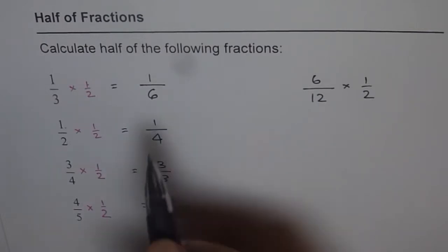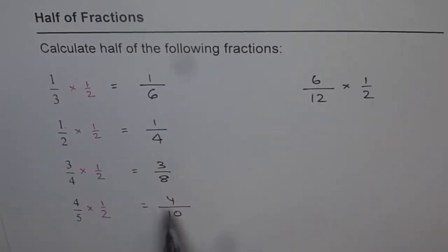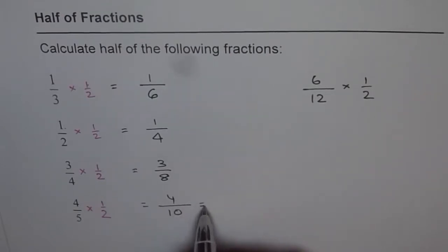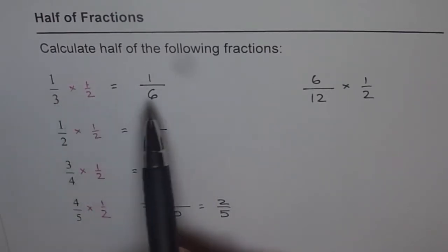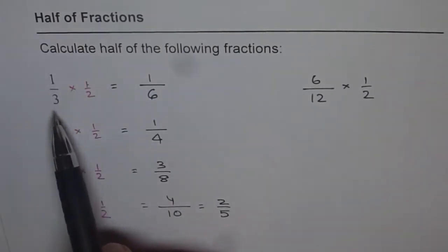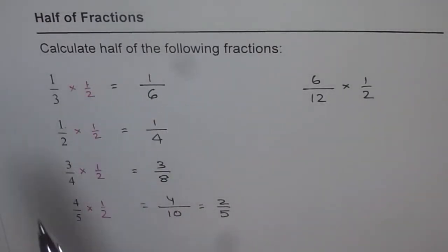Now you will notice that some of them can be simplified, especially this one. 4 out of 10 could be written as 2 out of 5. So 4 out of 10 is the same as 2 out of 5 — we get it by dividing both by 2. It is good practice to write your answers in the lowest terms. The idea is to understand that half of a fraction is a smaller number: 1 over 6 is half of 1 over 3.